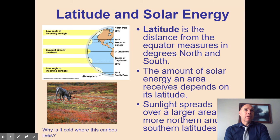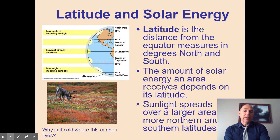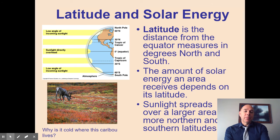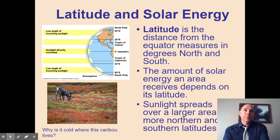The Earth also has a slight tilt on its axis. For North America, different seasons occur because at certain times of year the tilt points away from the sun, resulting in less direct sunlight — accounting for fall and winter. As the axis tilts the northern hemisphere toward the sun, we get more direct sunlight, representing spring and summer — and just the opposite for the southern hemisphere. Since photosynthesis drives ecosystems, more sunlight means more energy available to different trophic levels.